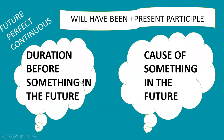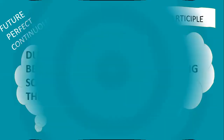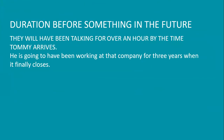Future perfect continuous. Its structure is: will have been plus present participle. It is used for actions which will be in progress at a certain time in the future, and will end later at some point. Example — duration before something in the future: 'They will have been talking for over an hour by the time Tommy arrives.' Duration expressions like 'for five minutes,' 'for two weeks,' and 'since Friday' can be used with this tense.